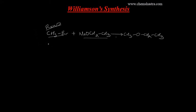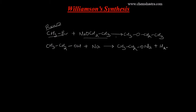Now let's understand the mechanism of this reaction. First, we need to understand how sodium ethoxide is formed. When you take an alcohol — CH₃CH₂OH — and treat it with sodium metal in the solid state, that gives you CH₃CH₂ONa, which is sodium ethoxide, along with the liberation of hydrogen gas.